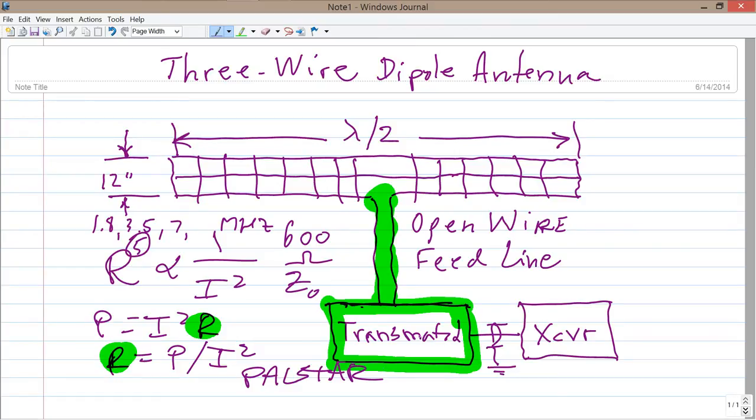You'll drop a pretty penny on this thing. I think it's about 700 bucks, but it's a 1500 watt capable trans match designed for actual balanced loads, and it has a balanced network in there. And that's really important, especially if you want to get everything you can out of your system.